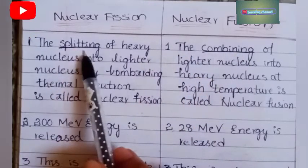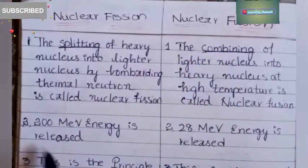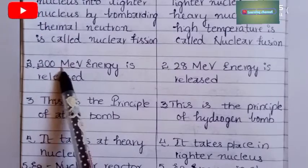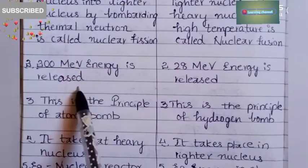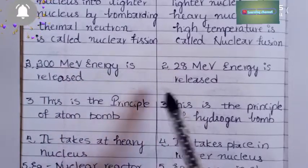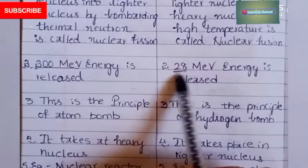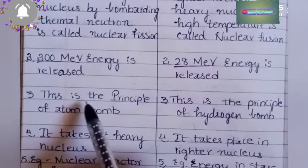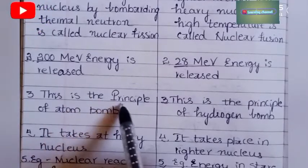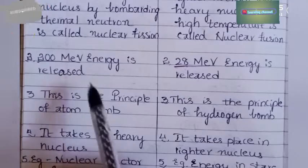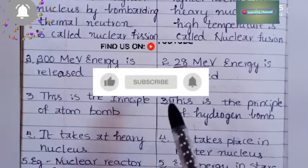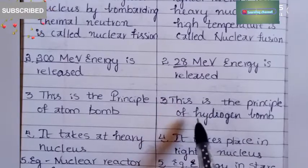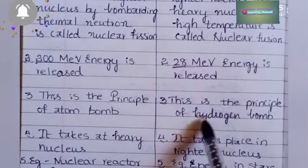The main points are underlined. In nuclear fission, 200 mega electron volts (MeV) of energy is released. In nuclear fusion, 28 MeV of energy is released. Nuclear fission is the principle of the atom bomb. Nuclear fusion is the principle of the hydrogen bomb.